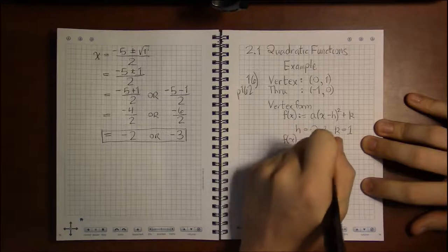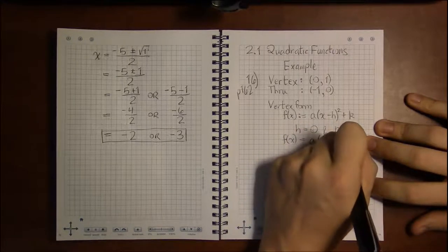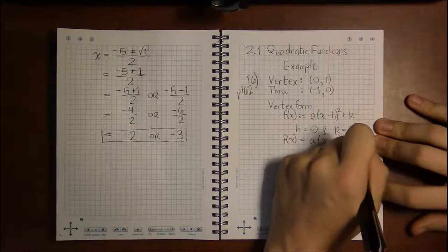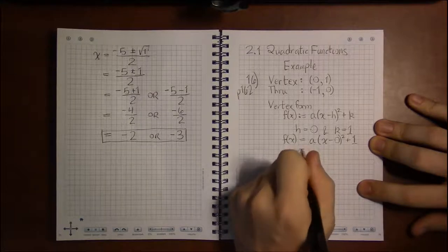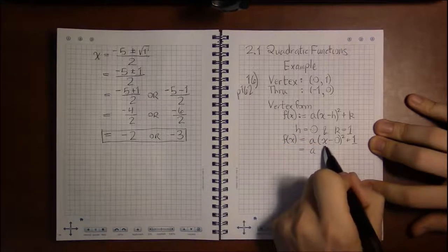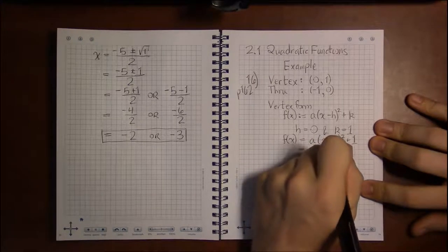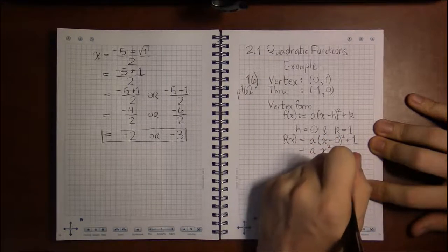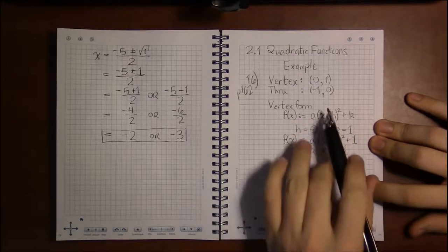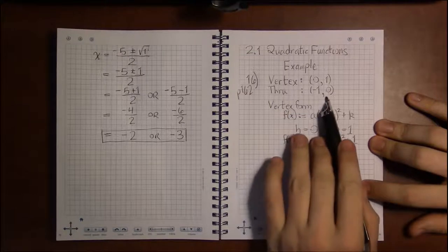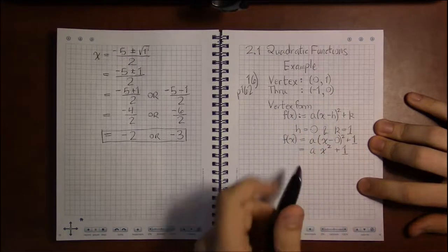except for the value of a. And all we have to do then is use this other point to find the value of a. I'll simplify this a bit because x minus 0 is just x, so this is simply a times x squared and then add 1.